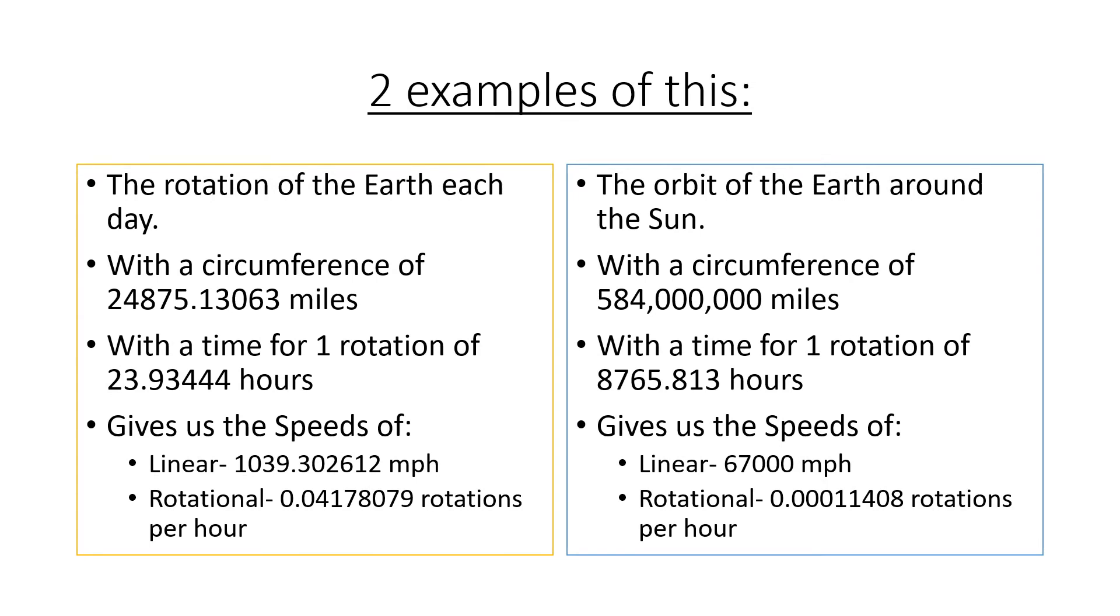Two examples of this. The rotation of the Earth each day, with a circumference of 24,875.13063 miles, with a time for one rotation of 23.93444 hours, gives us the speeds of linear 1039.302612 miles per hour.